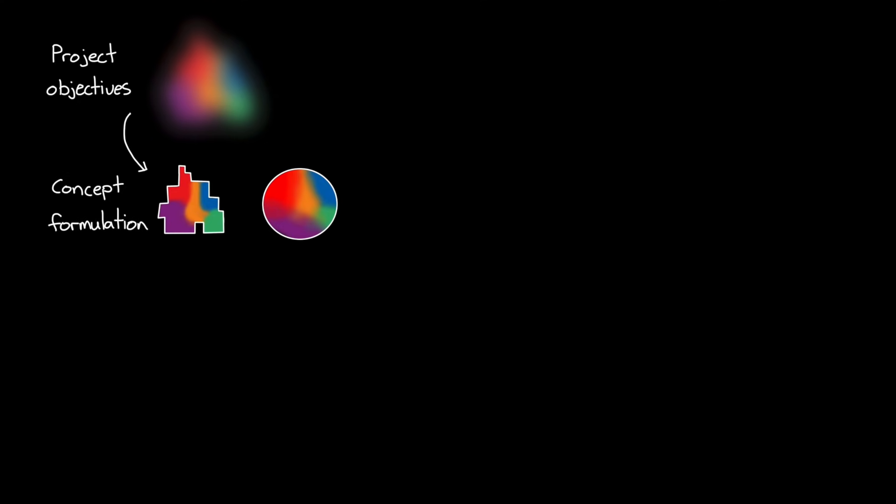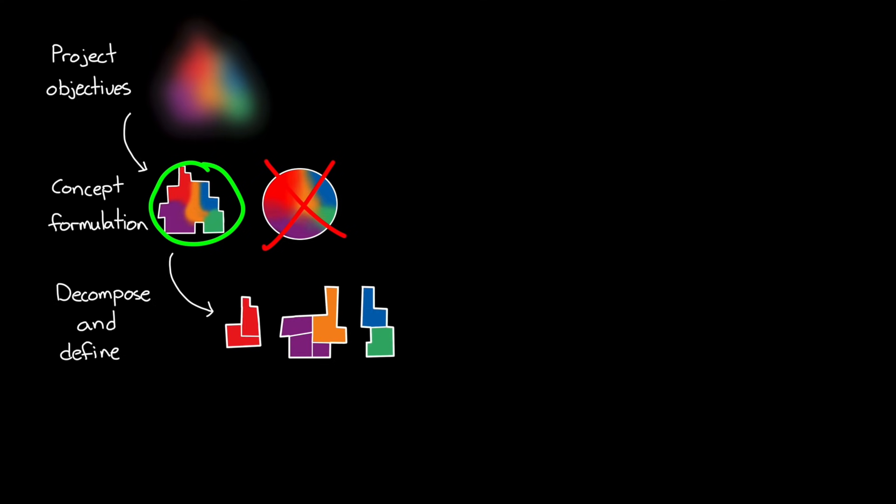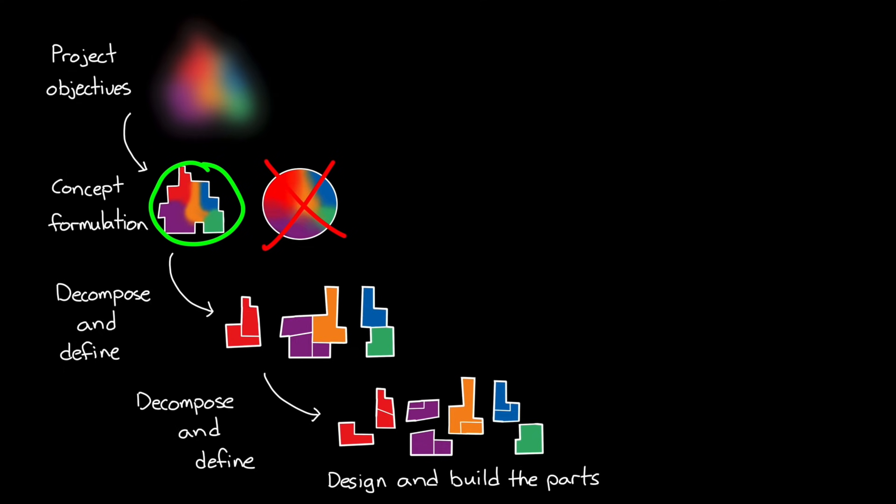At the beginning of a project, we start with a nebulous set of objectives of what we're trying to accomplish. We then form a few different concepts that might meet those objectives, and through analysis and simulation, narrow it down to a preliminary set that we want to go forward with. Often, this set is complex enough that it needs to be broken down into smaller components. And then, those components can be broken down even further, until you're left with a set of things that are simple enough for you to understand how to engineer them.